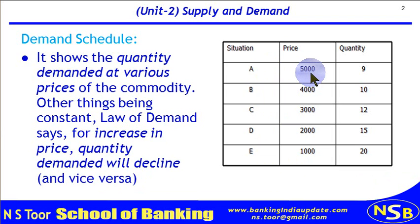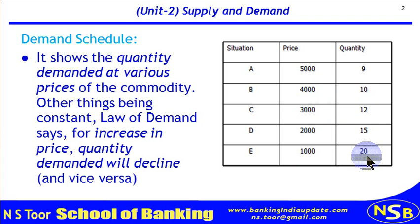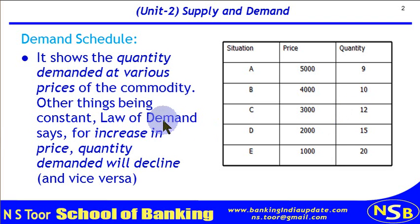Let us see this demand schedule. Combination A: price 5000, quantity demanded 9. Price decreases to 4000, quantity demanded increases. Price reduces further, quantity demanded increases further. From the bottom: price 1000, demand 20. Price increases to 2000, demand reduces to 15. Price increases to 3000, quantity demanded decreases to 12. So according to the law of demand, if other things are constant, increase in price leads to decline in quantity demanded and vice versa.